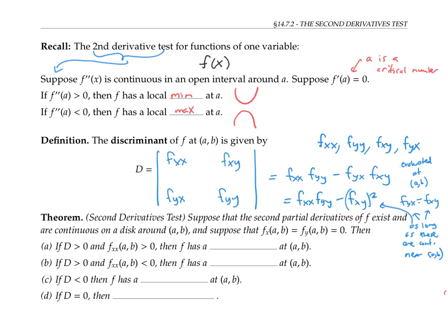Now I can state the second derivatives test. Suppose that the second partial derivatives of f exist and are continuous in a disk around the point (a,b), and suppose also that the first partials f sub x and f sub y are zero at (a,b), so we know (a,b) is a critical point. If the discriminant is positive and f sub x,x is also positive, then f has a local min at (a,b). If the discriminant is positive but f sub x,x is less than zero, then f has a local max at (a,b). If the discriminant is negative, then f has a saddle at (a,b).